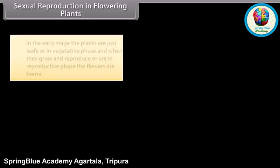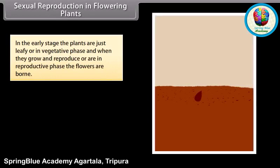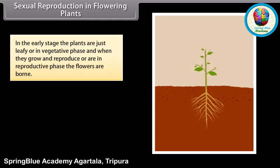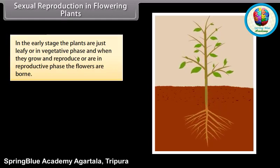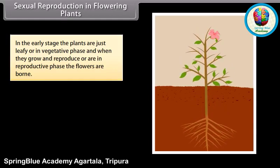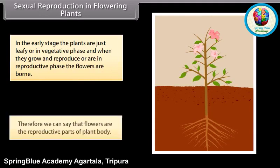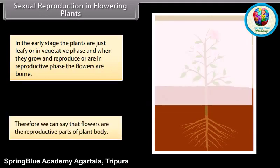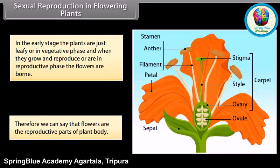In the early stage, plants are just leafy or in a vegetative phase. When they grow and reproduce, or are in the reproductive phase, flowers are born. Therefore, we can say that flowers are the reproductive parts of the plant body.